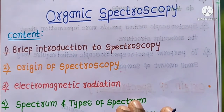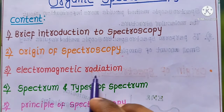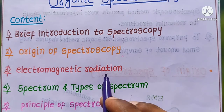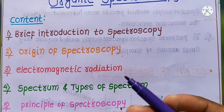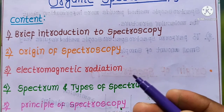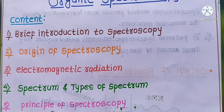Then we are going to study what is meant by electromagnetic radiation, how electromagnetic radiation are produced and their characteristics. In the last part of this video, we are going to discuss the principle of spectroscopy.